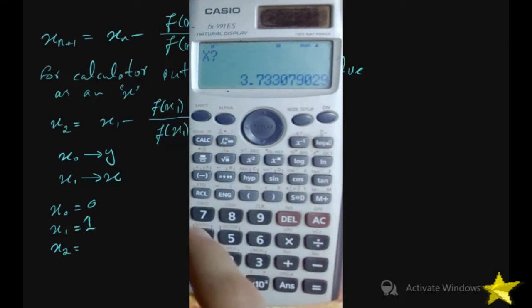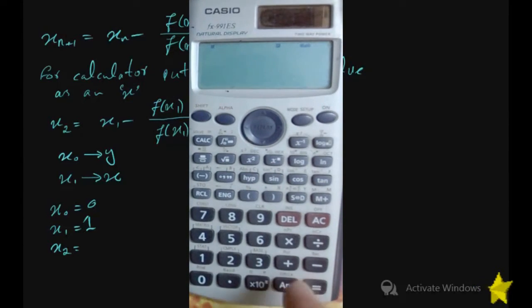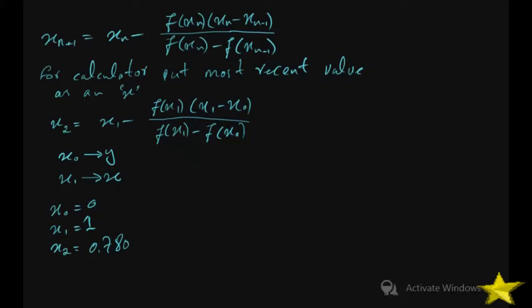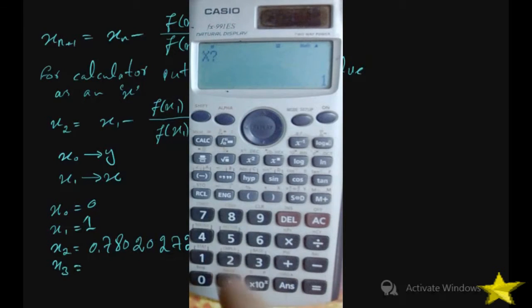Press calc. It asks for the value of x. Enter x1, which is 1. For y, enter x0, which is 0. We get 0.7802027.